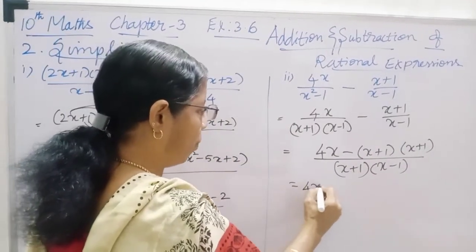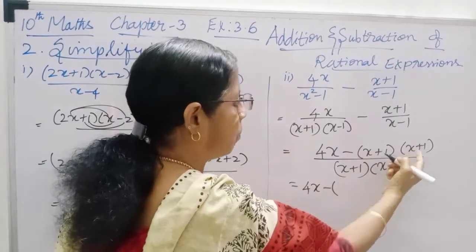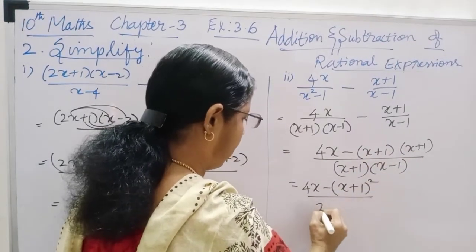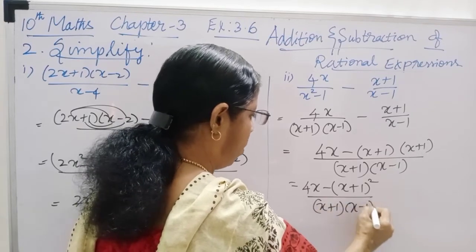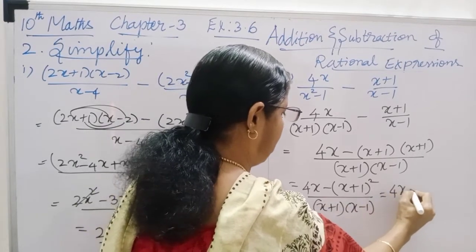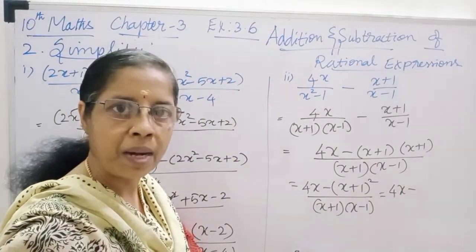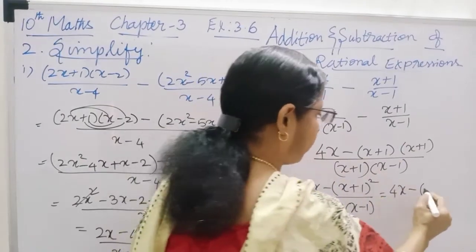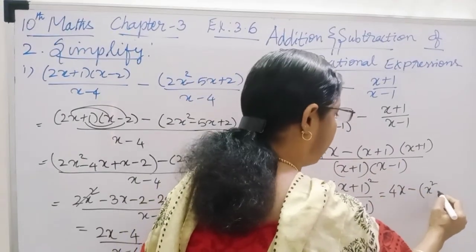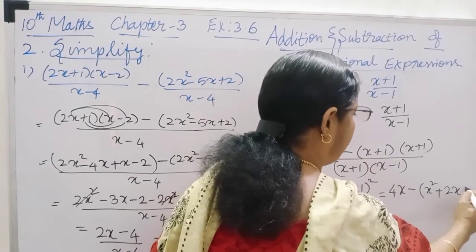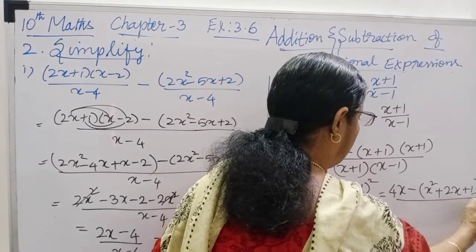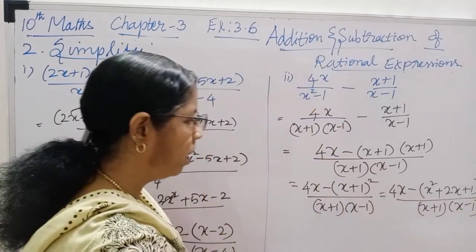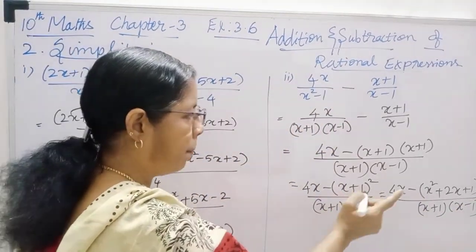Multiply: 4x minus, and x plus 1 into x plus 1 is nothing but x plus 1 the whole square, divided by x plus 1 into x minus 1. You will use the a plus b whole square expansion: x squared plus 2x plus 1, divided by x plus 1 into x minus 1.